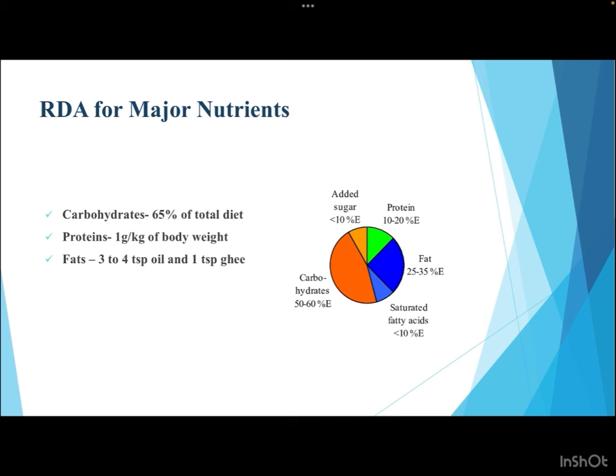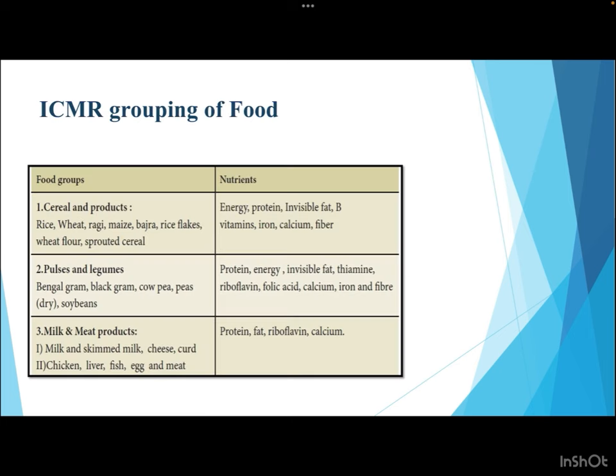The recommended dietary allowance for major nutrients: carbohydrates should contribute around 50 to 65 percent of total diet energy; proteins around 1 gram per kg of body weight depending on age, gender, and physiological condition; fats about 3 to 4 teaspoons of oil and 1 teaspoon of ghee. Overall, carbohydrates provide 50 to 60 percent of energy, proteins 10 to 20 percent, and fats 25 to 35 percent. Saturated fats and added sugars should each be less than 10 percent of daily energy intake.